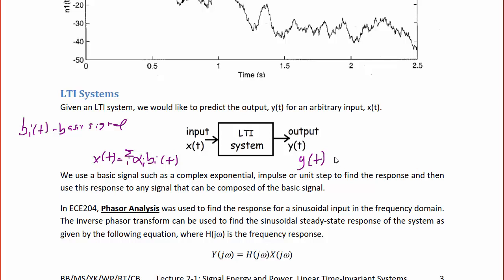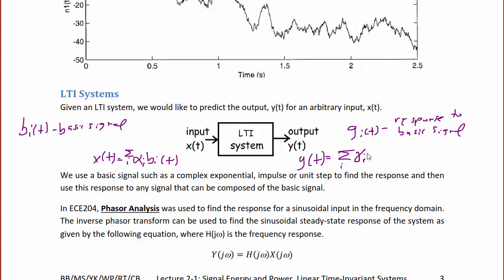If the response to b_i(t) is g_i(t) — the response to the basic signal — then y(t) is a linear combination of g_i(t): y(t) = Σ_i γ_i g_i(t). In EC204, phasor analysis was used to find the response for a sinusoidal input in the frequency domain. We now know that a sinusoidal input is a linear combination of complex exponentials.